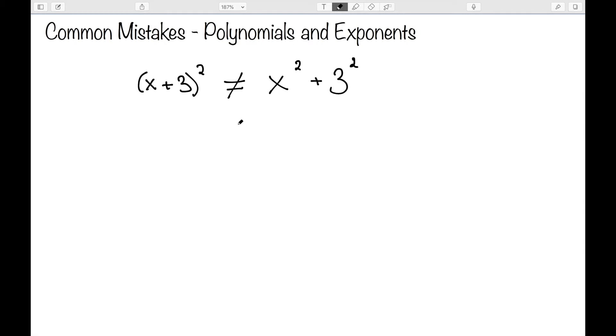One of the biggest mistakes is trying to distribute exponents, saying (x+3)² equals x²+3², but that is in fact not true. Squaring x+3 means multiplying x+3 times itself. So in order to do this properly, we need to FOIL.